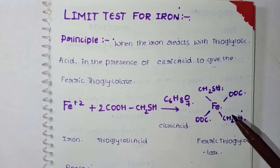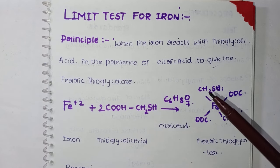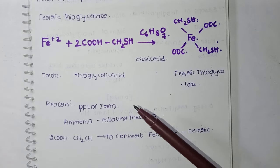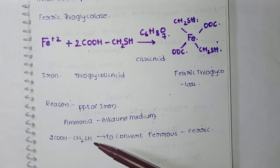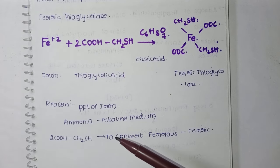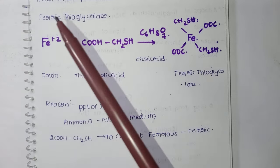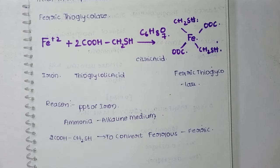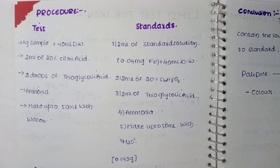The reasons: precipitation of iron occurs during this test. We use ammonia in the process to make the medium alkaline - we keep our solution in alkaline medium. We use thioglycolic acid to convert the ferrous form (Fe²⁺) to the ferric form (Fe³⁺).